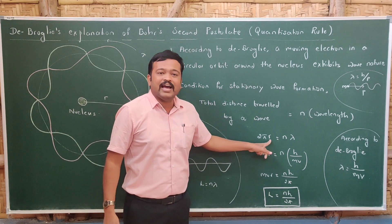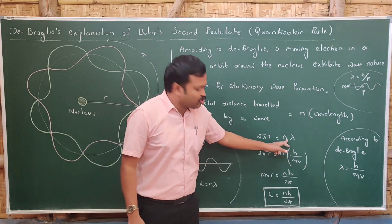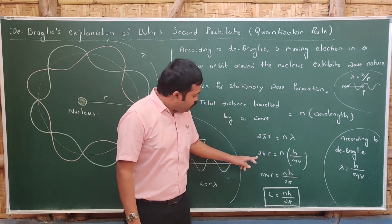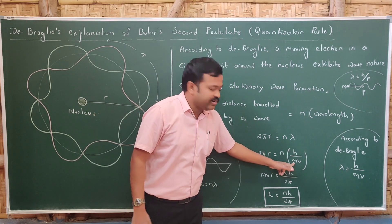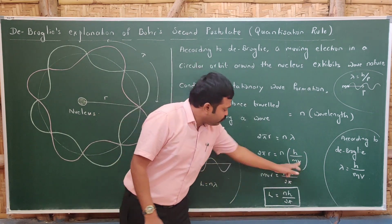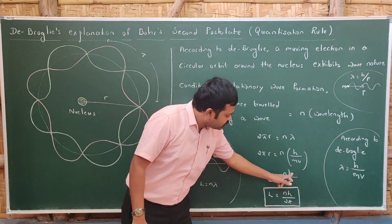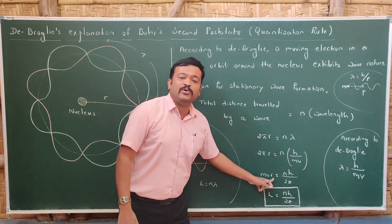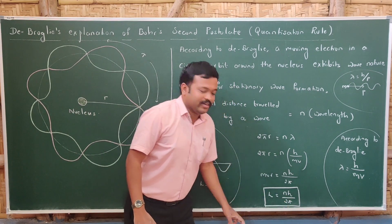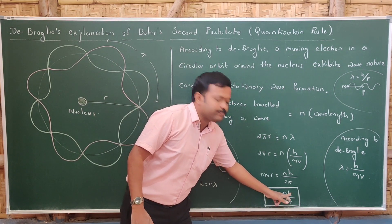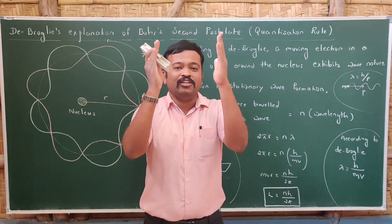When an electron revolves around the nucleus, the distance traced is the circumference of the circle: 2πr equals n times λ. From de Broglie's hypothesis, λ equals h/mv, so substituting: 2πr equals n times h/mv. Rearranging gives mvr equals nh/2π, where mvr is angular momentum L. Therefore, L equals nh/2π — angular momentum is an integral multiple of h/2π, explaining Bohr's second postulate.